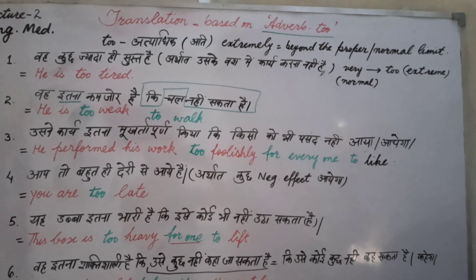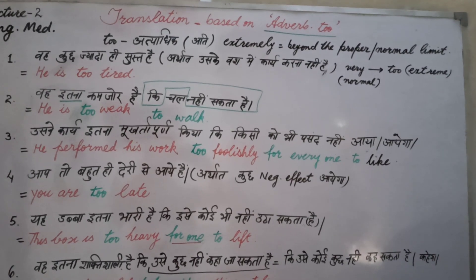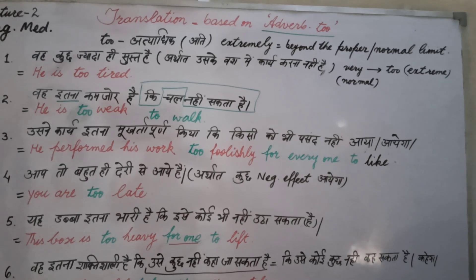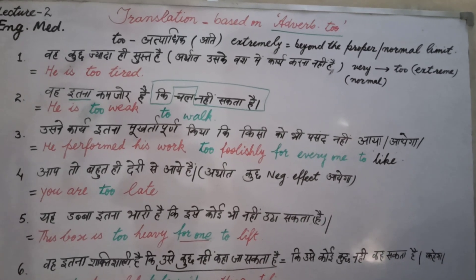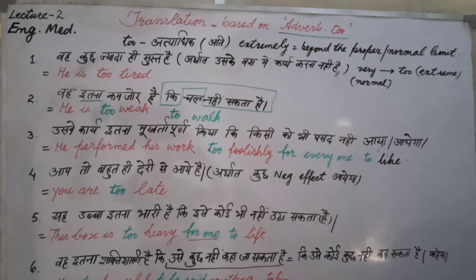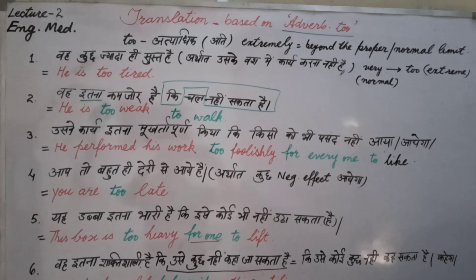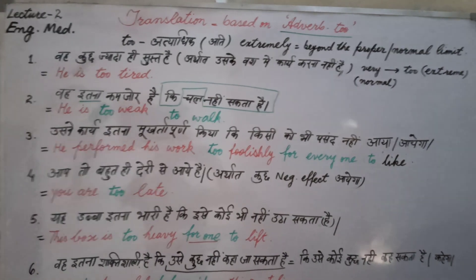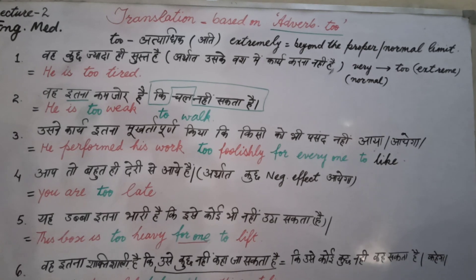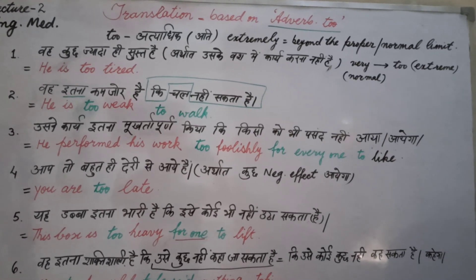He is not able to do anything more or any longer. That's why when he is not able to do anything, there is a negative expectation from him — we use TOO. 'He is too tired.' Similarly, 'he is too weak.' But in this sentence, we add some extra portion.